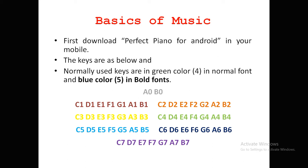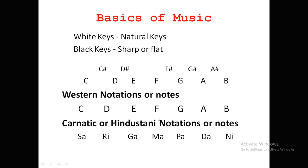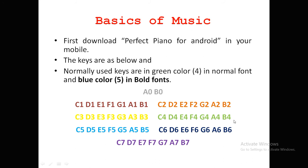They continue all the way up to A7 and B7. After B1, C2 comes; after B2, C3 comes; after B3, C4 comes. This is how the Perfect Piano application is displayed. We generally use the green color range (C4 to B4) and the blue color range (C5 to B5).